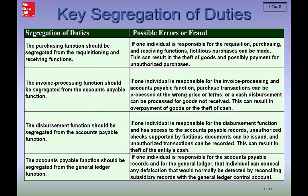One of the key areas that can serve as a great internal control is segregation of duties. We're going to discuss the purchasing function itself and what you should segregate. For example, one individual should be responsible for the requisition where you're initiating and gaining approval. Purchasing and receiving functions should be separated, because if one person does both, you might get fictitious purchases — this could essentially be theft.